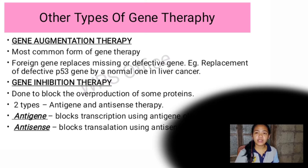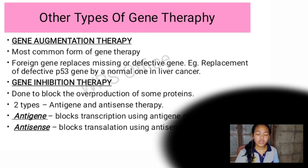The first type of gene inhibition therapy is anti-gene therapy, which blocks transcription using anti-gene oligonucleotides. The other type is antisense therapy, which blocks translation using antisense oligonucleotides.